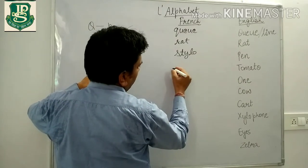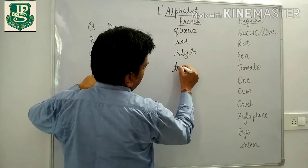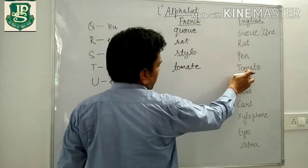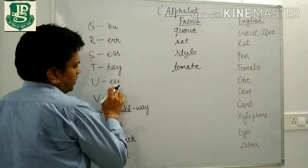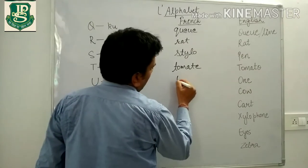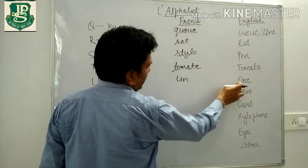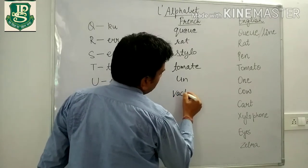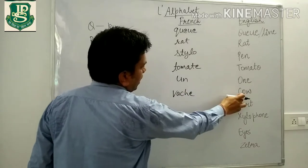T for Tomat meaning tomato. U for un meaning one. V for vache meaning cow.